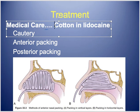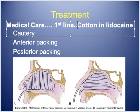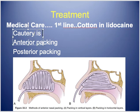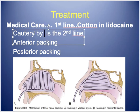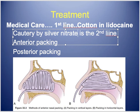If the first line of pressure fails to stop bleeding, the second line is cautery. Cauterization is most commonly done with silver nitrate. Importantly, never cauterize both sides of the septum simultaneously, as this can destroy the cartilage and create a perforation in the nose.